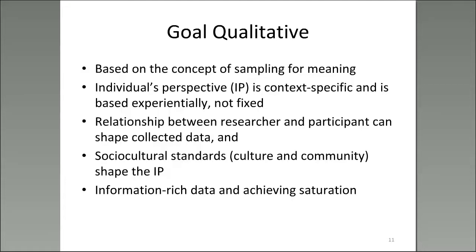In qualitative research, the goal is sampling for meaning. It's context-specific and experiential — it's not fixed. The relationship between the researcher and participants can shape how data are collected, and the cultures and community you're working with can also shape this process. Your goal is to obtain information-rich data to allow you to achieve saturation — in other words, acquire enough information to draw a credible conclusion based on how you analyze those data within that particular context.